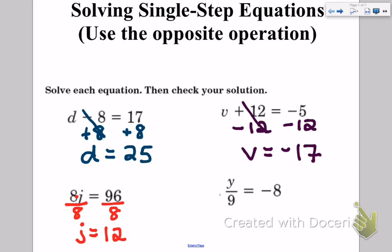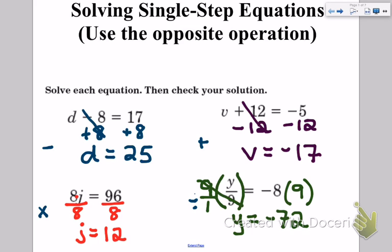For the last example, we have seen subtraction, addition, multiplication. Now we have division represented. What is the opposite of division? Well, that's multiplication. So what we do is whatever we see in the denominator, we're going to multiply by that number. But whatever we do to one side, we have to do to the other. If we remember our fraction multiplication, we're really multiplying 9 over 1 times y over 9, and those 9's are going to cancel, and we just get y by itself, which was our goal. Negative 8 times 9 is going to give us negative 72. Again, we were applying the opposite operation that we saw, but doing that to both sides to maintain our balance.